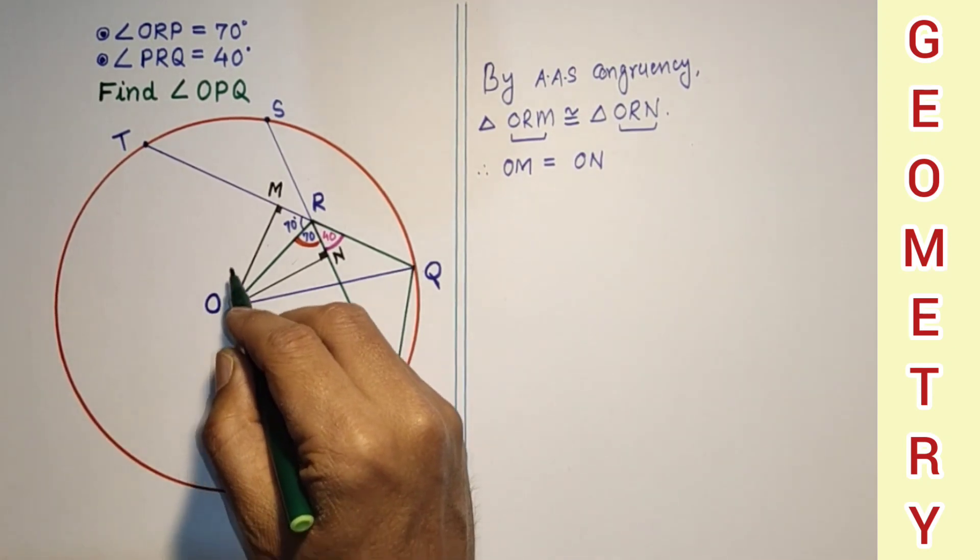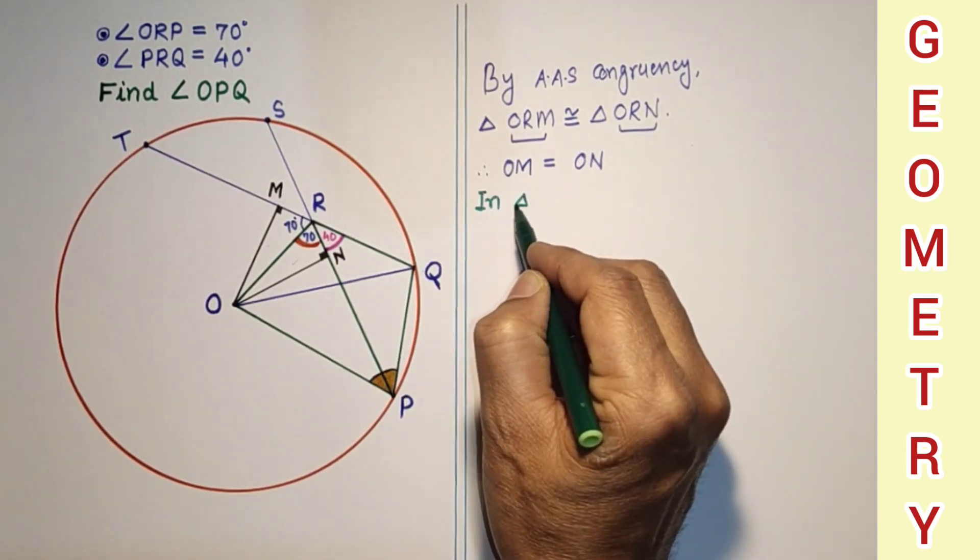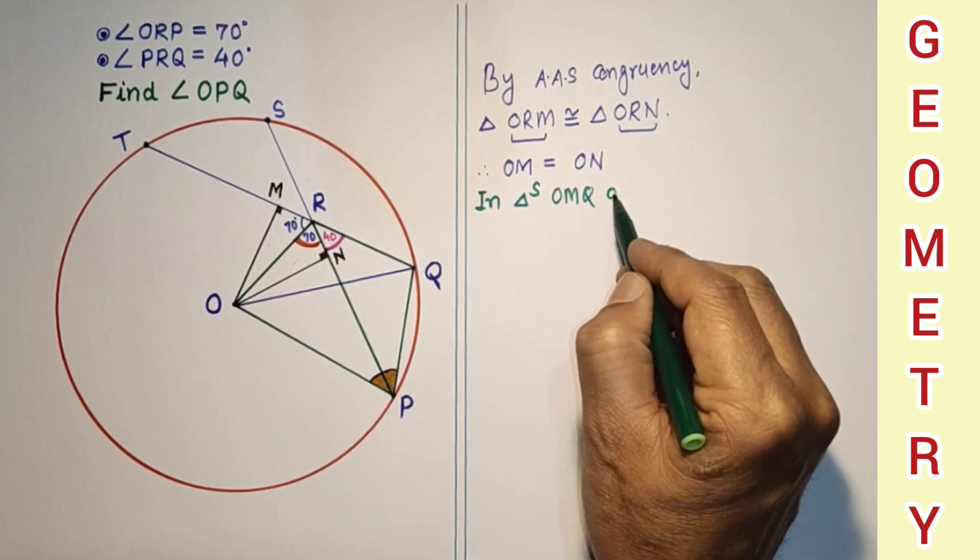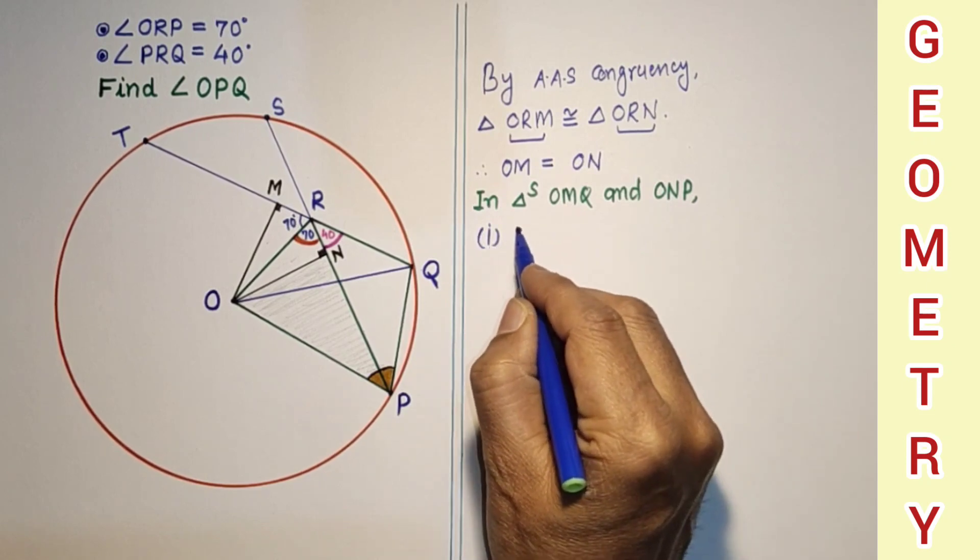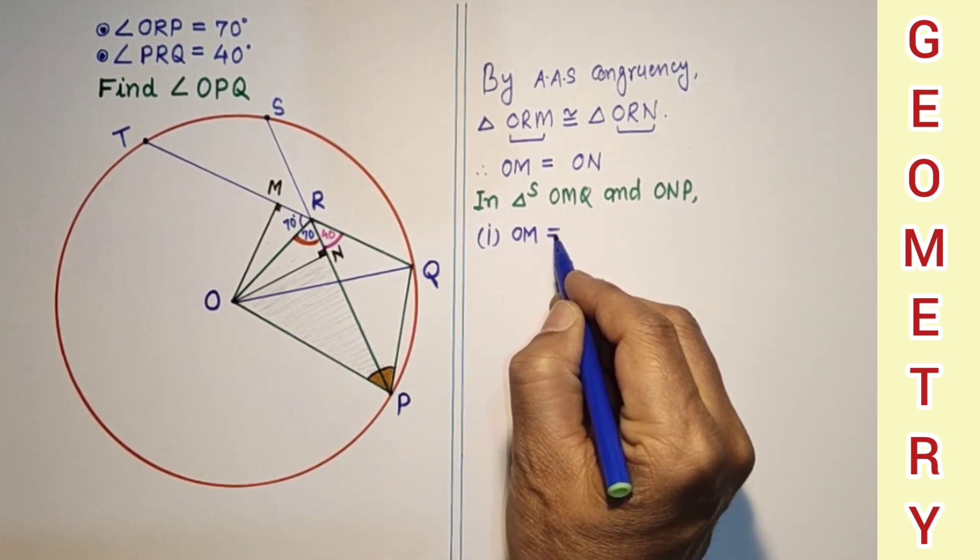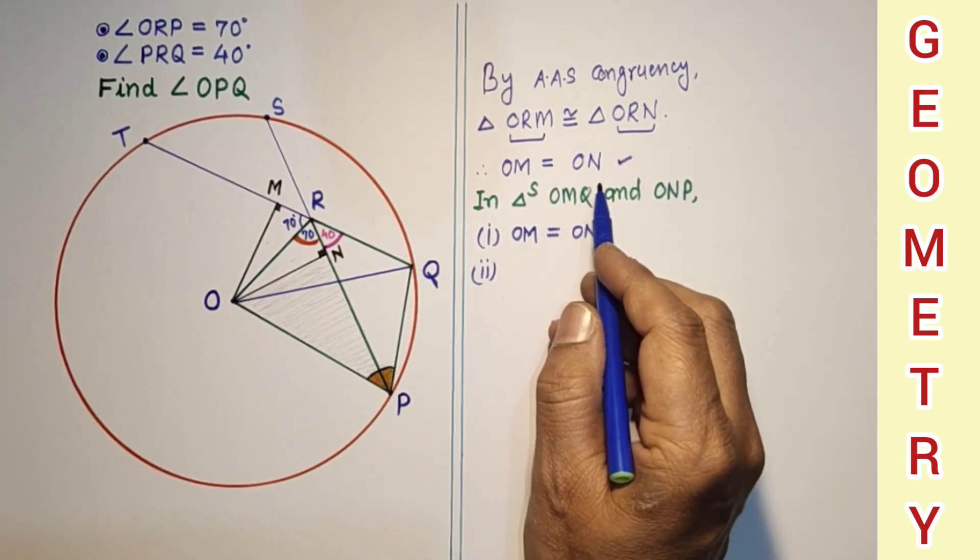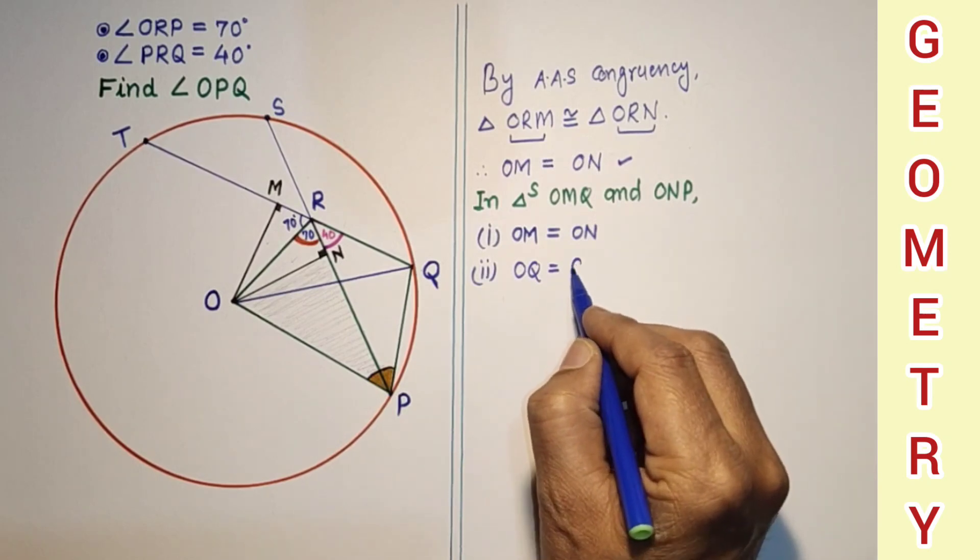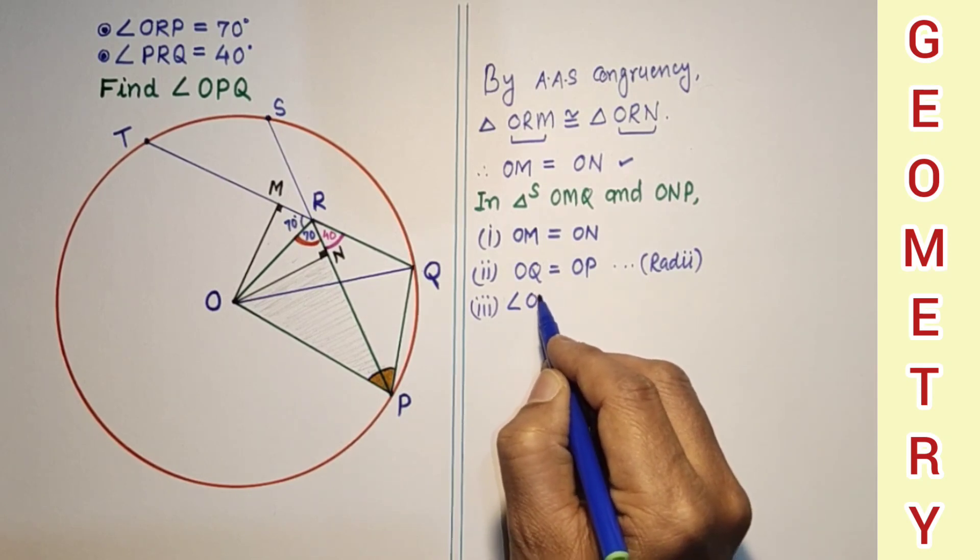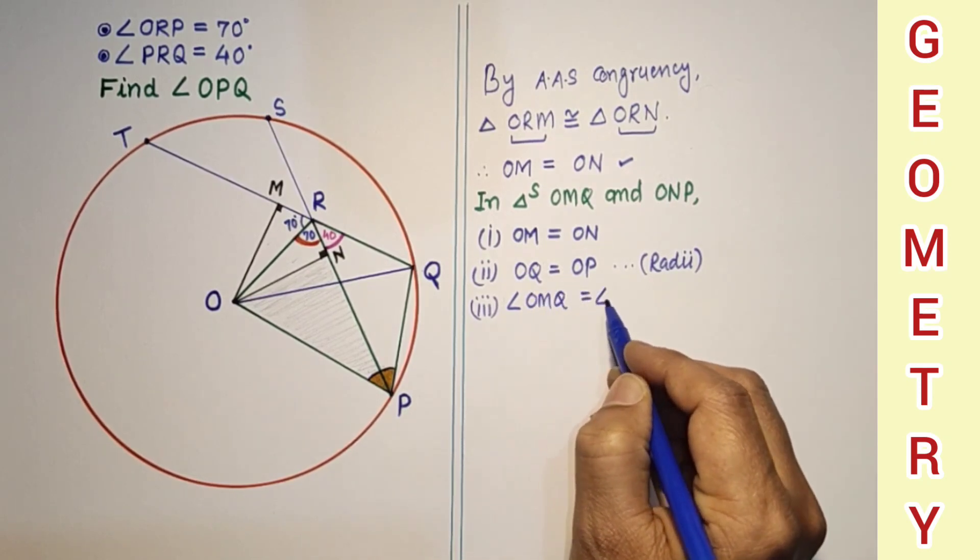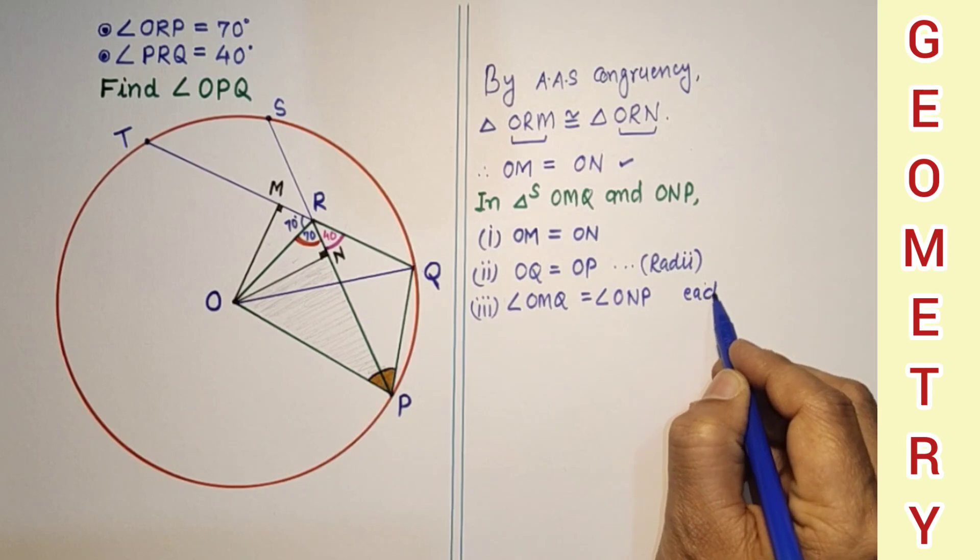Now in triangle OMQ and ONP, first, OM is equal to ON, proved above. Second, OQ is equal to OP, radii. Third, angle OMQ is equal to angle ONP, each 90 degrees.